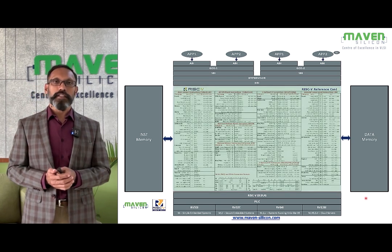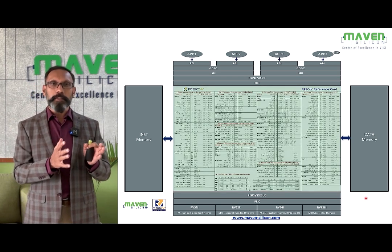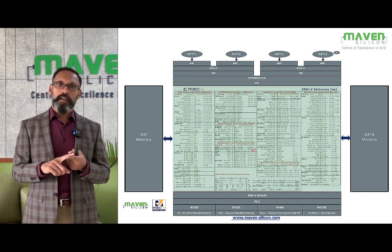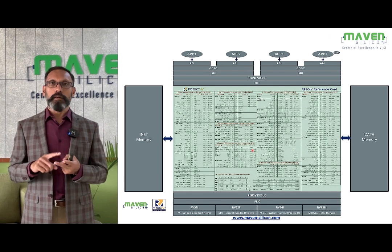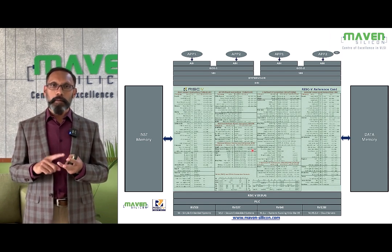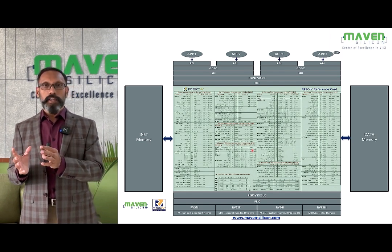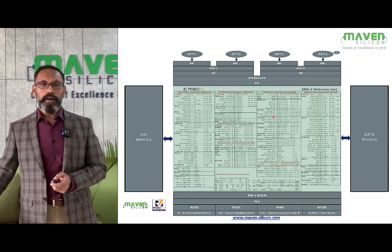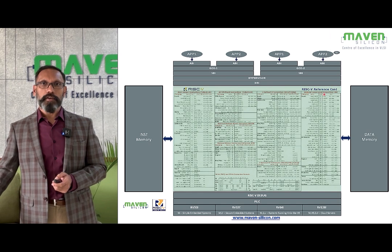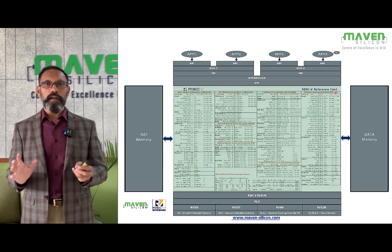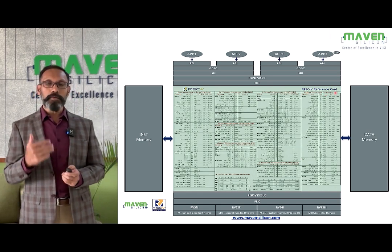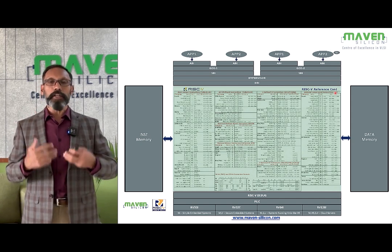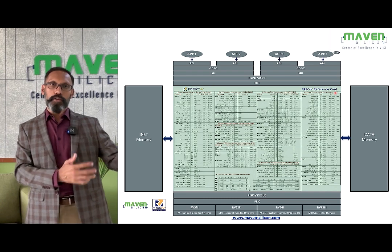There are various kinds of instructions: 40 instructions as part of integer extension, plus extensions like single precision and double precision floating point, multiplication and division, and compressed instructions. Engineers also need to understand RV64I and the differences it introduces. RISC-V provides a RISC-V reference green card with all kinds of instructions to help engineers become familiar with the RISC-V ISA, depending on the application they want to deal with.